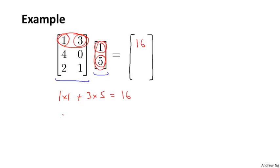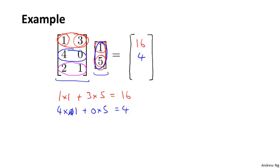I'm going to write 16 here. Then for the second element, I'm going to take the second row and multiply by this vector. So I have 4 times 1 plus 0 times 5, which is equal to 4. So I get a 4 there. And finally for the last one, I have 2 times 1 plus 1 times 5, which is equal to 7. And so I get a 7 over there.